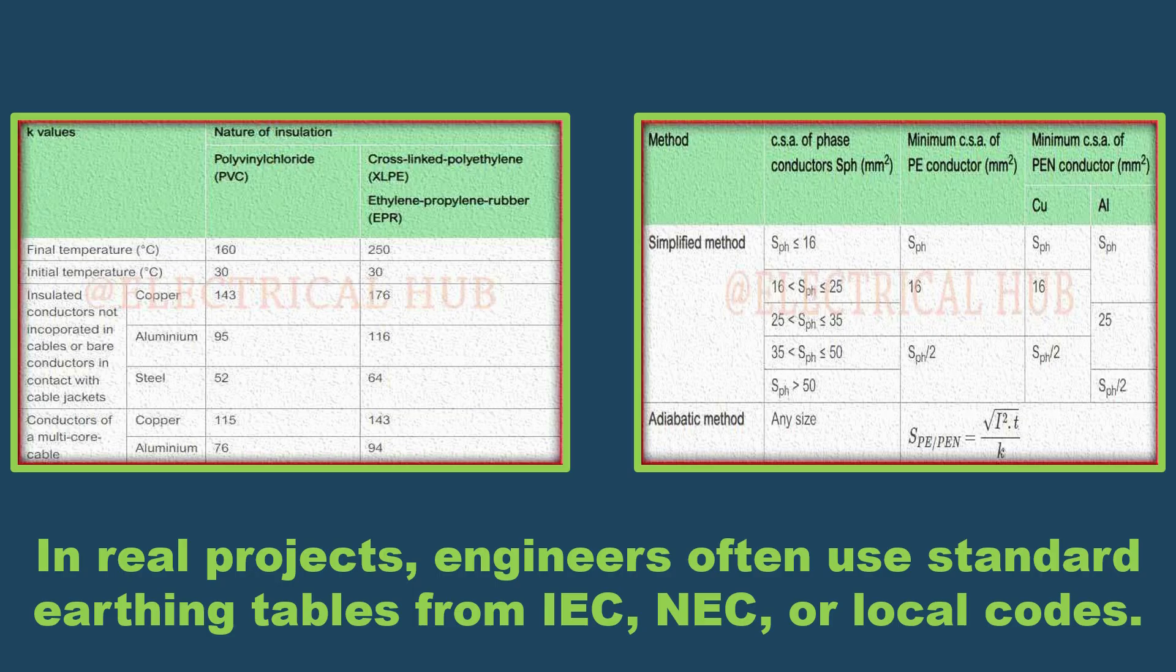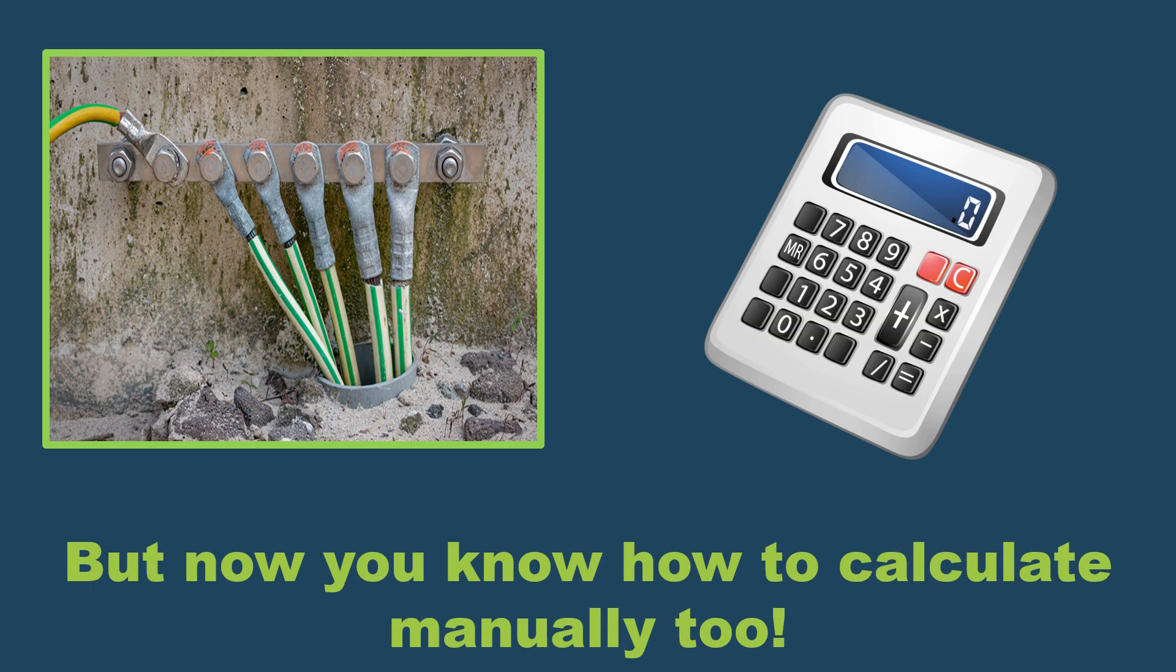Step 5: Use tables for faster work. In real projects, engineers often use standard earthing tables from IEC, NEC, or local codes. But now you know how to calculate manually too.